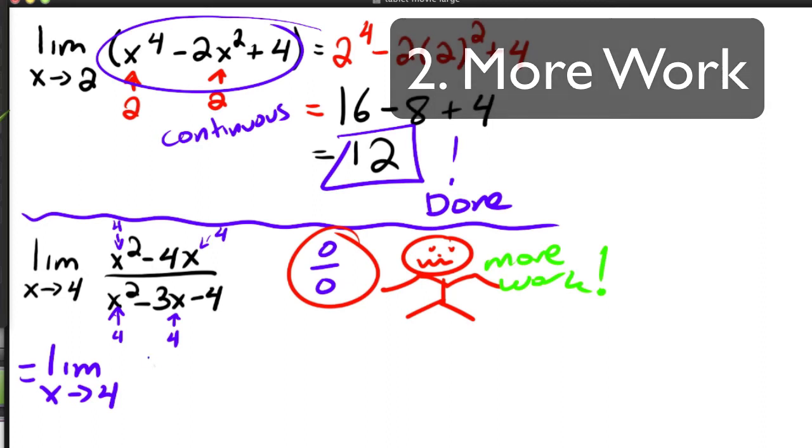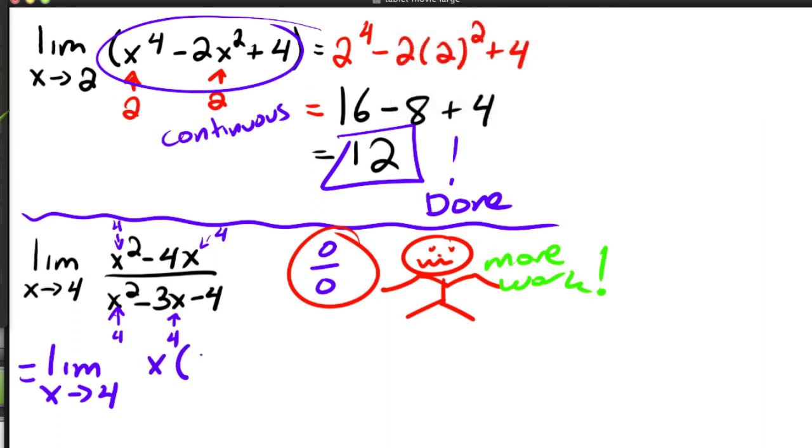And so notice at the top, you can factor out an x, and you'd have x minus four. The bottom is factorable as well as a trinomial. And this guy would factor into x minus four and x plus one.